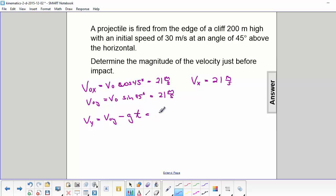So that's going to be 21 minus 9.8 times the total time, which was 28 seconds. That becomes negative 253 m/s.